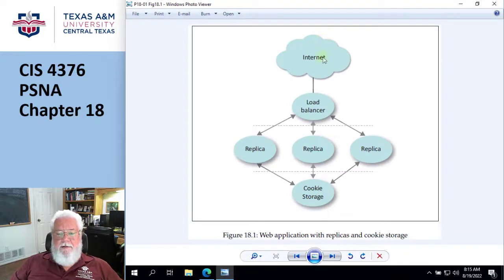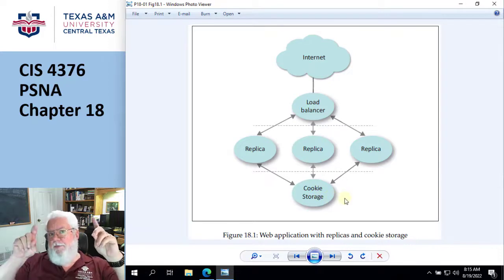So here's an example where I have an internet, I have a load balancer, and then I have three replicas. But I have a separate cookie storage. And again, this cookie storage is not complex.